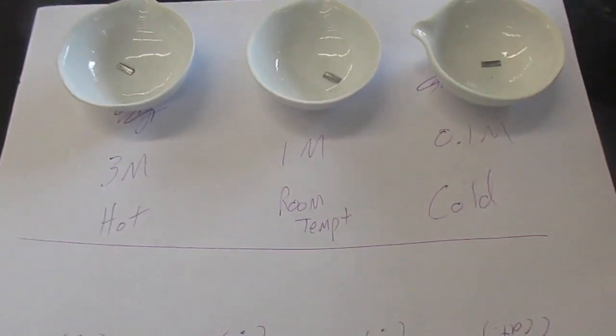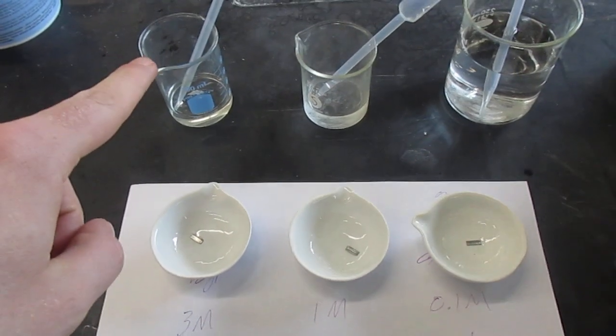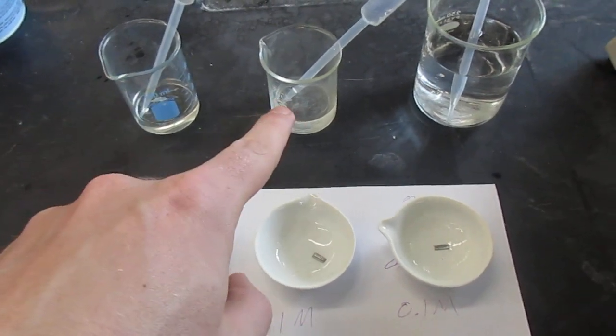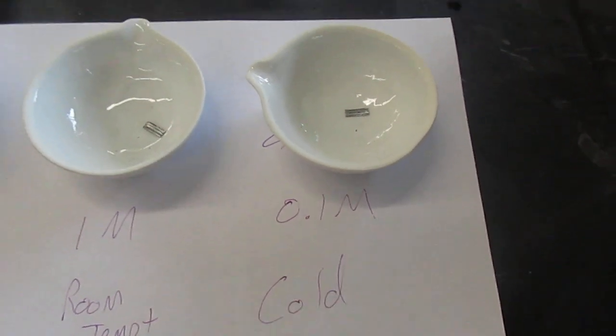Next, we're going to look at concentration. So here, this one is going to have 3 molar hydrochloric acid, which is three times as strong as the 1 molar which we used in the last one, and we have a 0.1 molar.